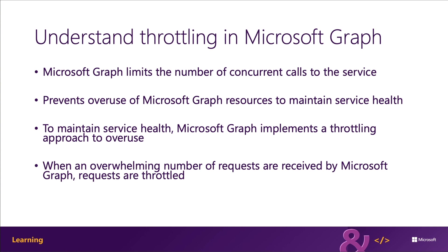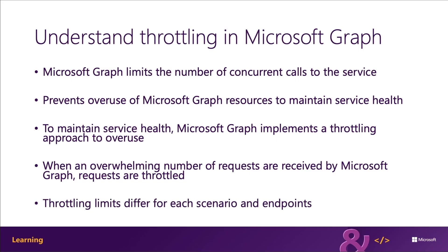Many developers ask: what are the throttling limits per hour or per day? The question is not easy to answer. Microsoft Graph is a proxy service that provides access to multiple Microsoft resources, and each of these services has its own process for calculating when requests should be throttled. Not all requests are treated equally — a read request isn't as demanding as a write operation. A read request for the ID and name of 50 groups isn't the same as using the expand query operator to include ID, name, email, and phone number for all members in those groups.